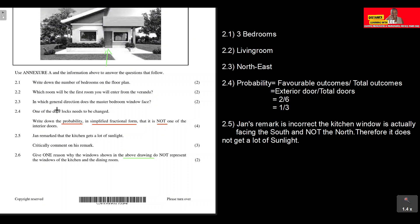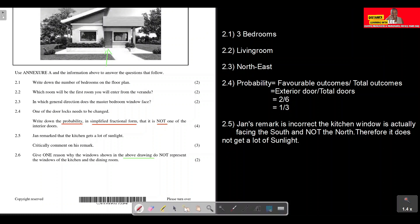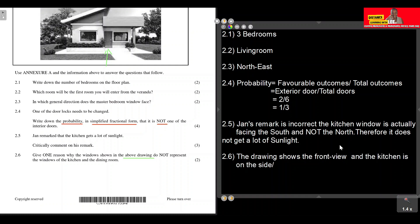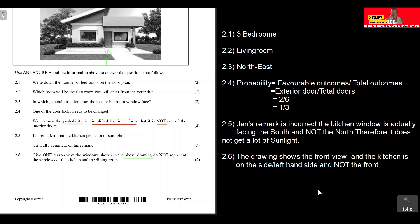The drawing represents the front view of the house, not the side view. Since the kitchen is on the side — the left-hand side — and not the front, its windows are not shown in this elevation drawing. That is the reason we give for question 2.6.